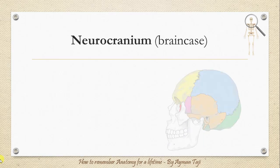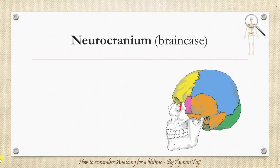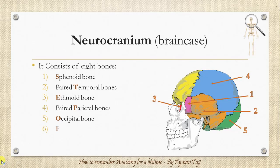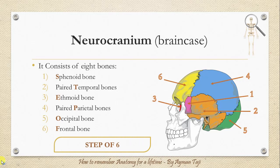The neurocranium consists of flat bones of the skull and the base of the skull, which include the following eight bones: the sphenoid bone, paired temporal bones, ethmoid bone, paired parietal bones, the occipital bone, and the frontal bone. To remember all of them, just remember 'STEP OF SIX,' as each letter of this mnemonic will remind you of the first letter of one of these six bones.